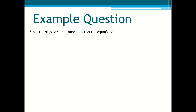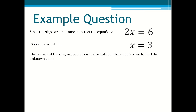Since the signs are the same, you subtract the equations and you're left with 2x = 6. Then you solve the equation and you get x = 3. Now you choose any of the original equations and substitute 3 in the place of x to find what y is equal to.